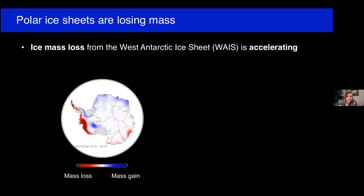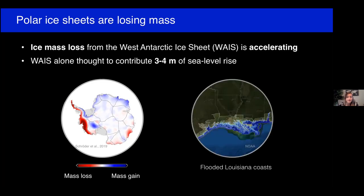I like to start with some very big picture just to get us all oriented. The figure at left shows the pattern of modern ice mass change in Antarctica. We know from geodetic measurements, such as those made by the GRACE Satellite Gravity Mission, that the West Antarctic ice sheet is losing mass, and this mass loss is accelerating. WAIS alone is thought to contribute three to four meters of potential sea level rise, which is equivalent to about the height of a one-story building. Today, I'm going to be talking about sea level changes arising due to our dynamic cryosphere — cryosphere-driven sea level changes.